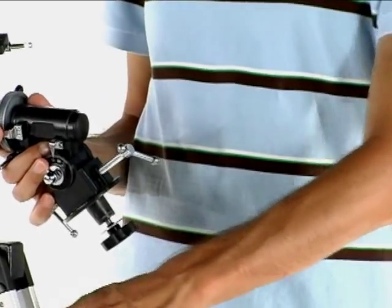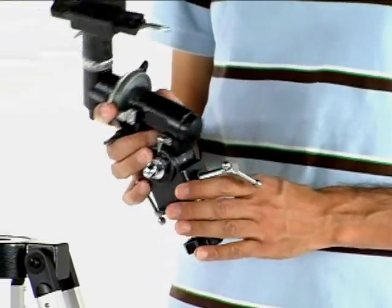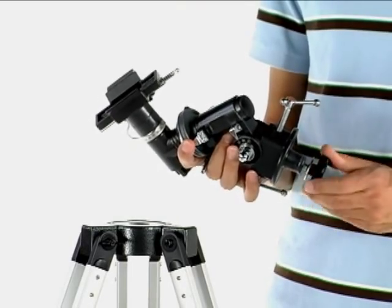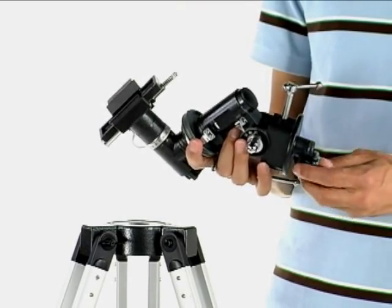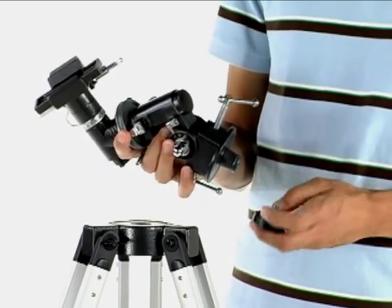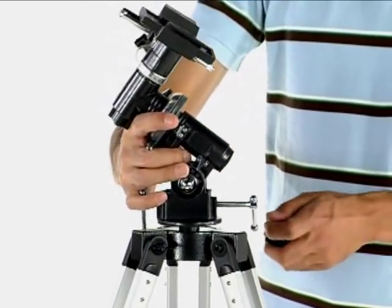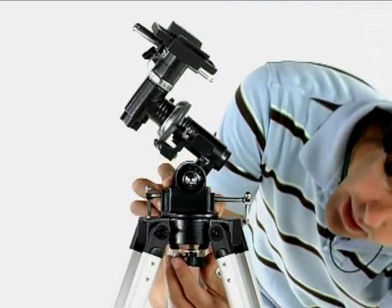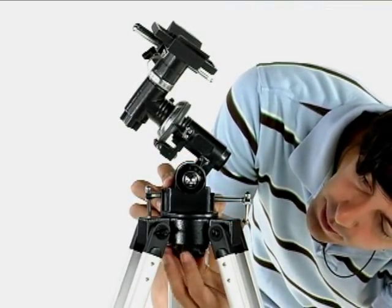Now that we have our tripod standing up, we are going to connect the equatorial mount to the tripod. First thing I'm going to do is remove this bolt from the bottom. It has a washer on it. And we'll slide it right in here. And connect the bolt to the undercarriage of the tripod.